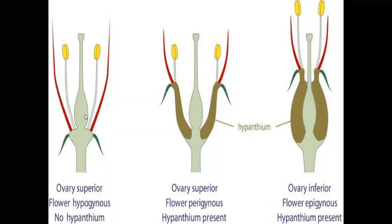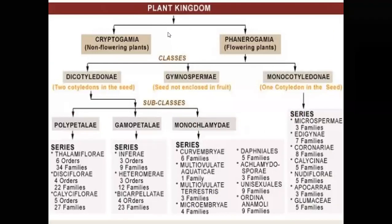From these three types of flowers, there are three types of ovary positions. Bentham and Hooker classified plants in 'Genera Plantarum.' The plant kingdom mainly shows two major groups: Cryptogamia (non-flowering plants) and Phanerogamia (flowering plants). Bentham and Hooker classified only the flowering plants.